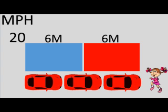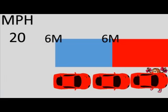Let's look back at the example with the child who ran out. At 20 miles an hour it would take about six metres — a car and a half length — for your thinking time. Now imagine you're distracted: the car takes longer to react. In this example, you can see we've started to react later, and as a result we've run the child over.